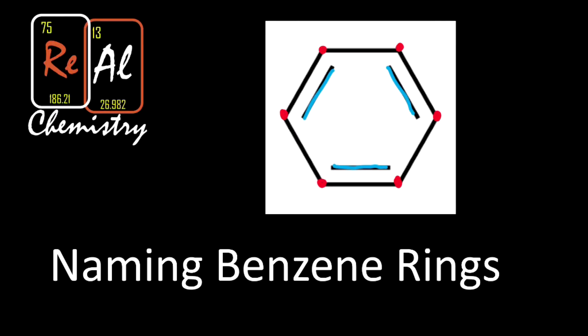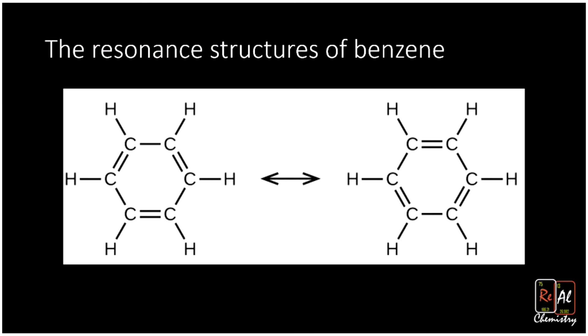We could put the double bonds where they are, or we could actually just rotate them one carbon over in each case. So both the yellow bonding shown there and the blue bonding are equally good ways to represent them. When we have two equally good ways to represent a molecule, we call those resonant structures.